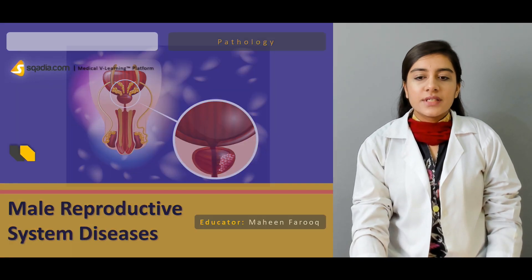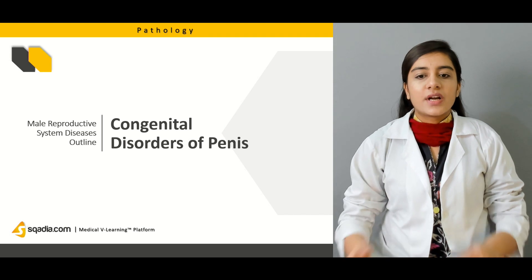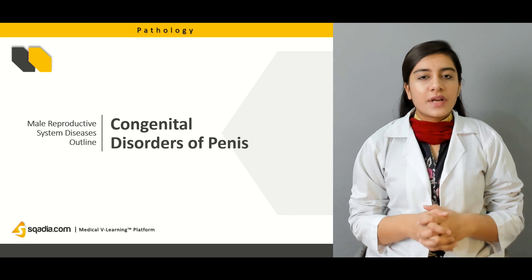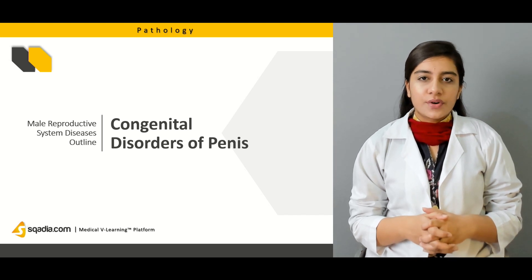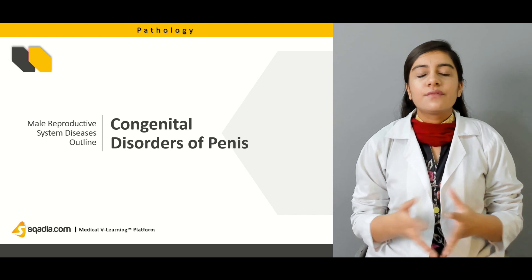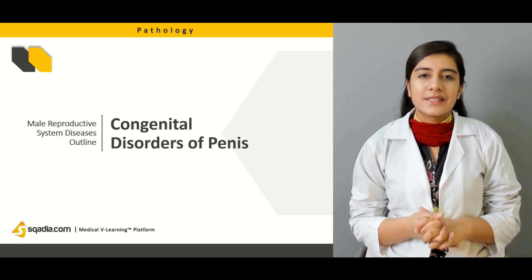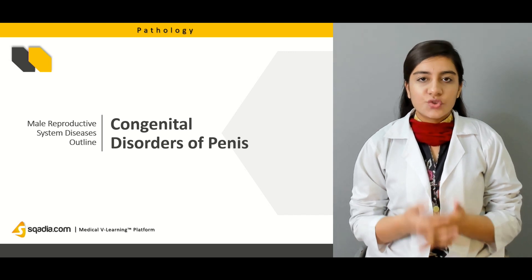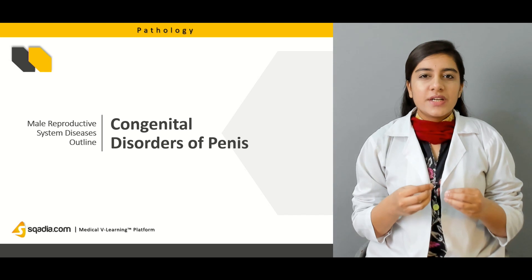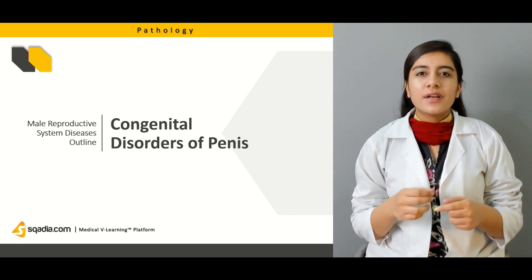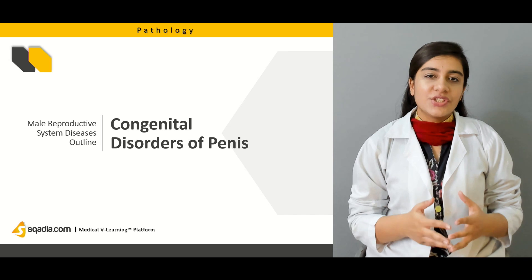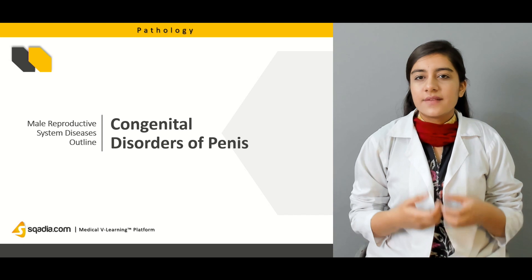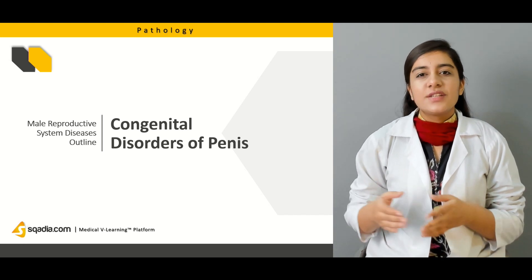The first diseases we will be discussing are the congenital disorders of the penis. There are almost four to five congenital disorders that are important. The first one is hypospadia, then epispadias, then we have phimosis, and so much more. We will look at what these congenital disorders are, how they occur, and what changes are taking place in embryonic life — what folds and membranes lead to these diseases.